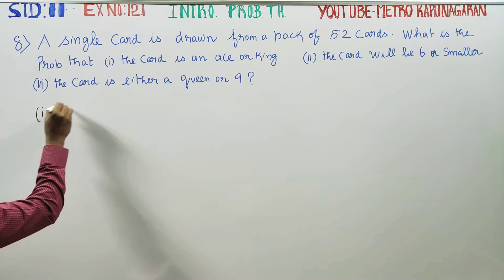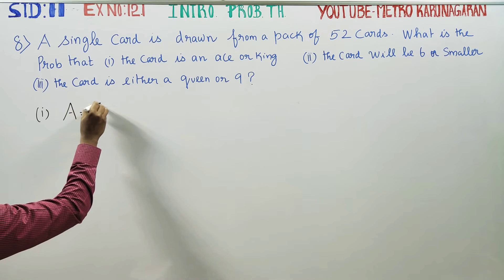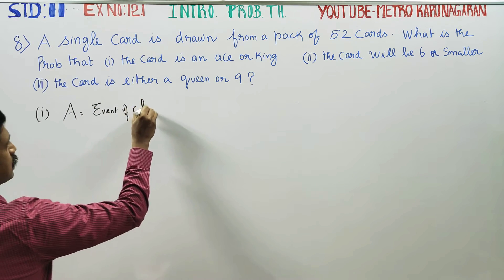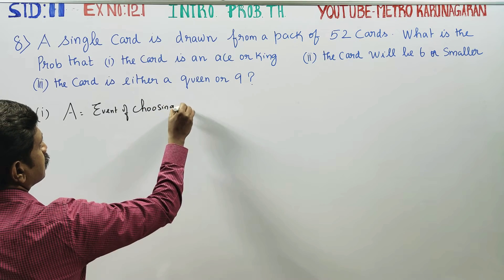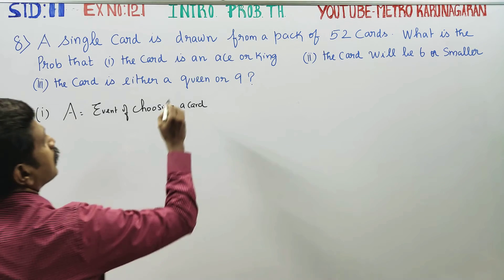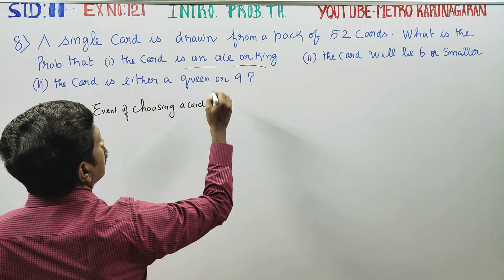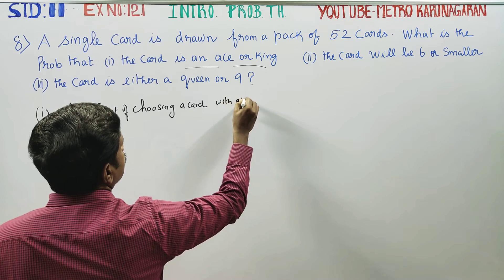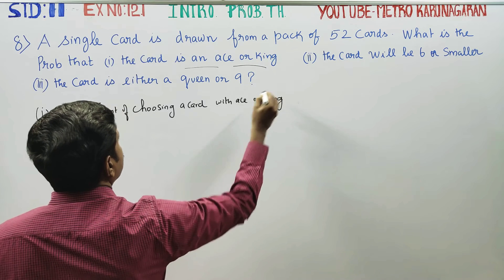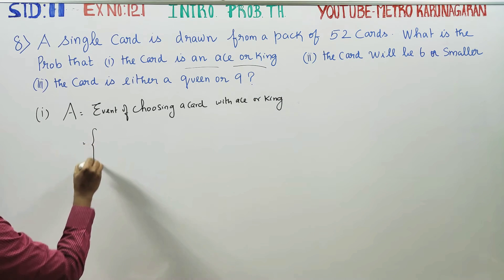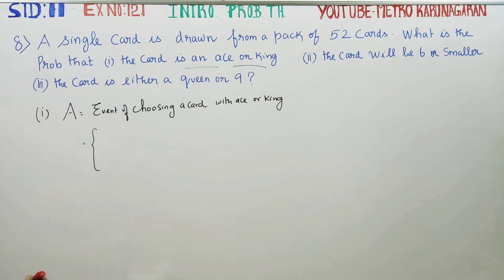A is equal to the event of choosing a card that is an ace or king. For example, if you have an ace, there are 4 symbols.